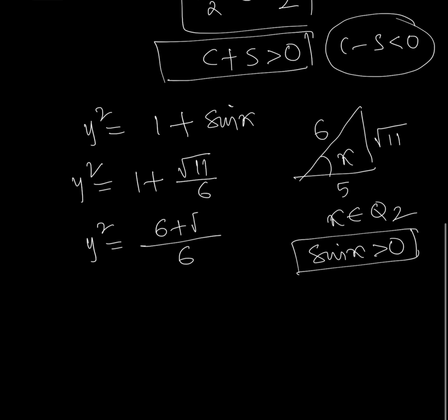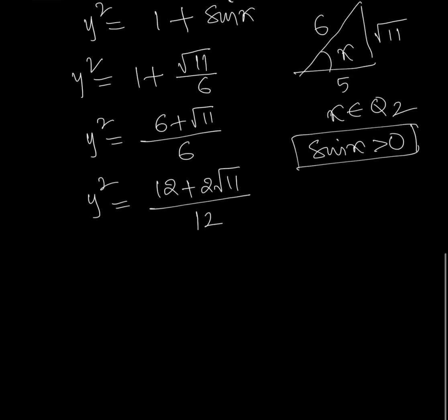Multiplying numerator and denominator by 2: y² = (12 + 2√11)/12. The numerator can be written as (√11 + 1)².